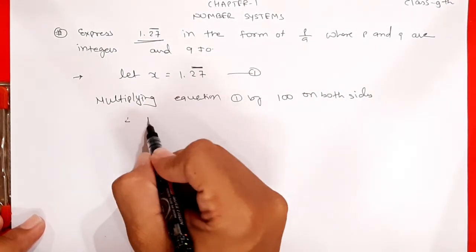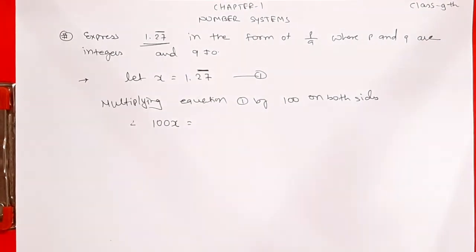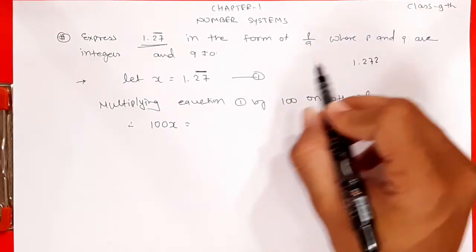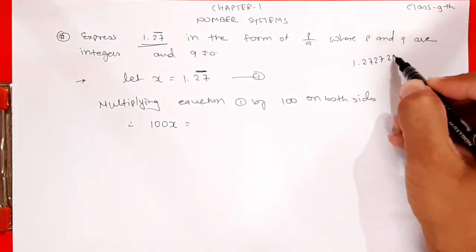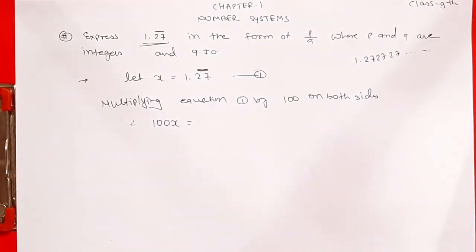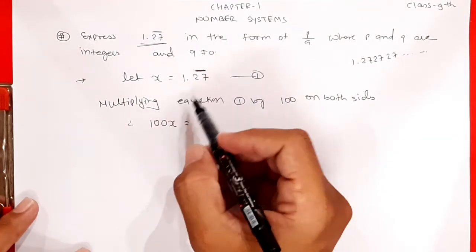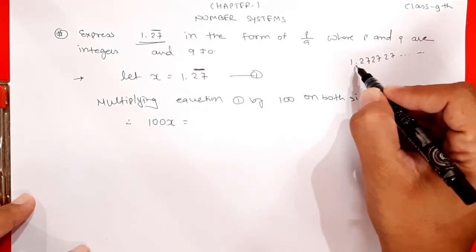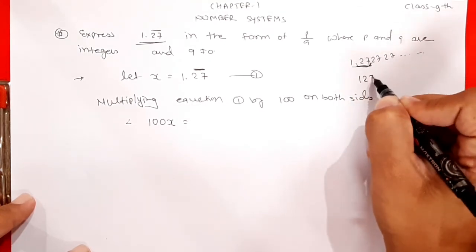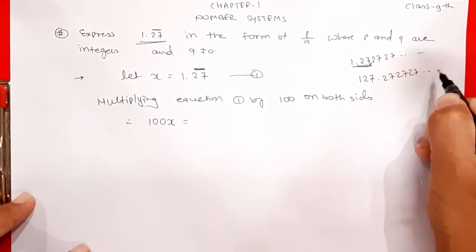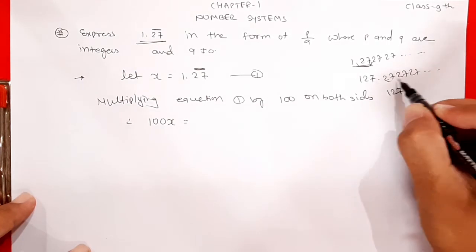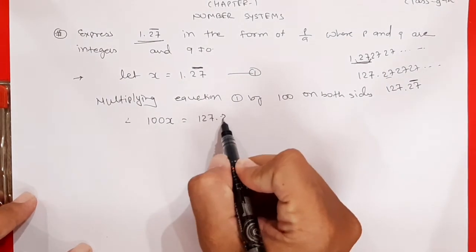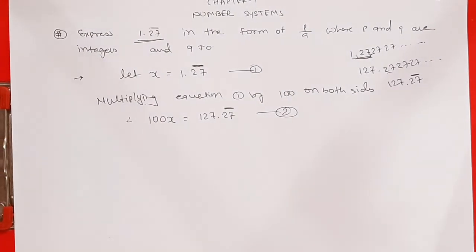100 se multiply karenge toh 100x is equal to — 1.27 bar ko hum 1.2727272727... likh sakte hain. 100 se multiply karte hain toh decimal 2 digit right shift hoga. Toh number ban jaayega 127.2727... jise hum 127.27 bar likh sakte hain. Yeh equation number 2 hai.